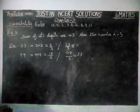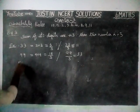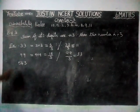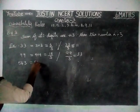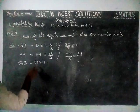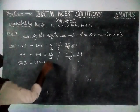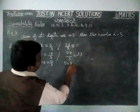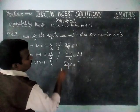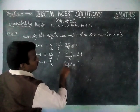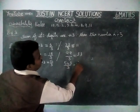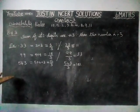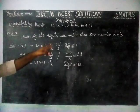Let's take another number: 543. 5 + 4 + 3 = 9 + 3 = 12, which is divisible by 3. So 543 is divisible by 3. We verify: in 5, we have one 3 remaining 2; in 24, we have eight 3's remaining 0; in 3, we have one 3. So the answer is 181. Therefore, if the sum of its digits is divisible by 3, then the number is divisible by 3.